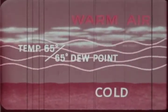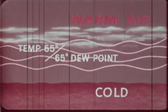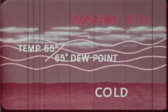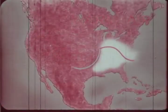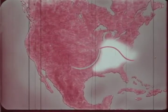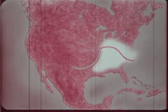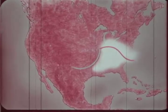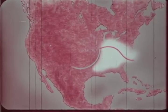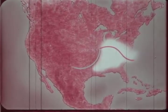When warm front fogs or low ceilings occur, they usually cover a large area. Since warm fronts usually move slowly, these conditions persist for many hours and become a definite hazard to flight operations.